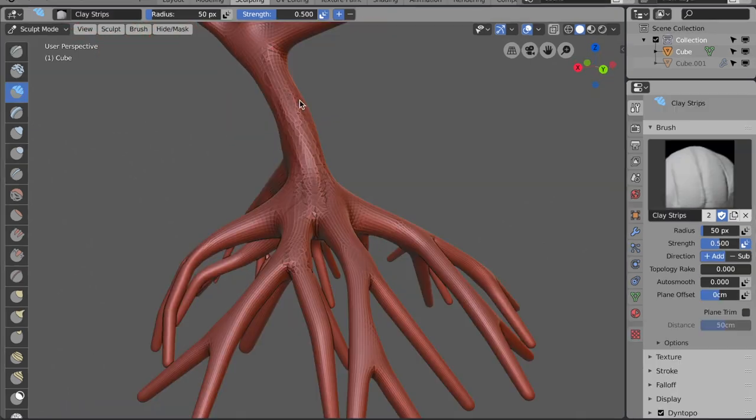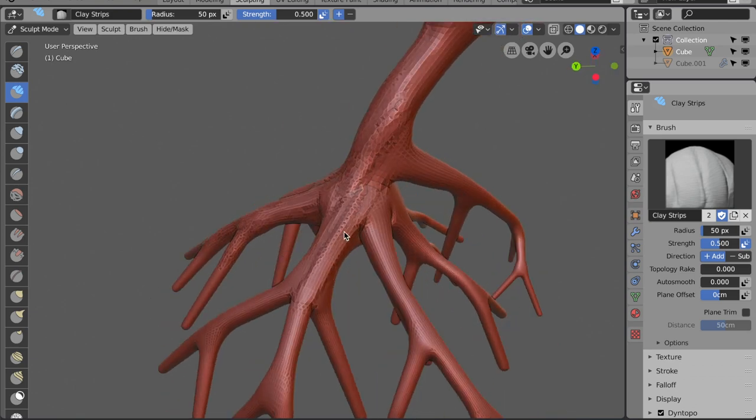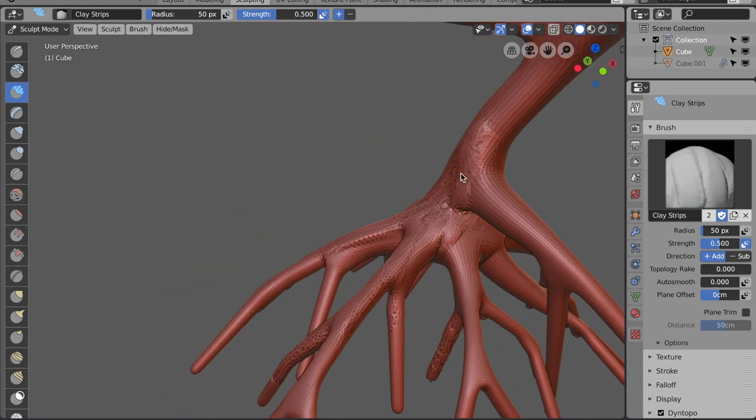At this stage you can sculpt in all sorts of extra details, but I just chose to give the tree a slightly more realistic texture. If you plan to print your tree at smaller scales, you can skip this step entirely.